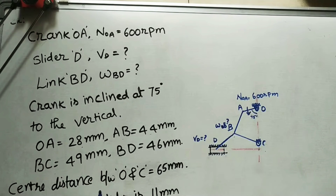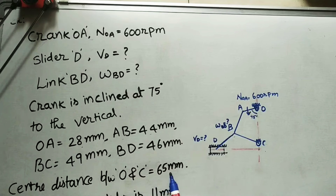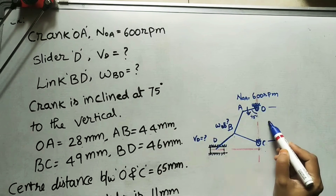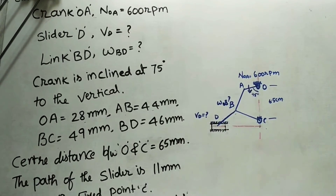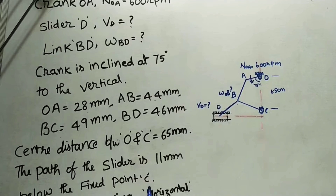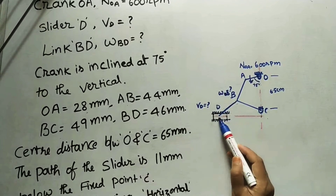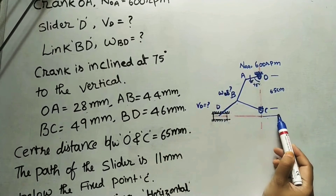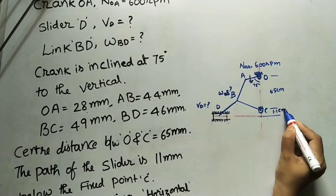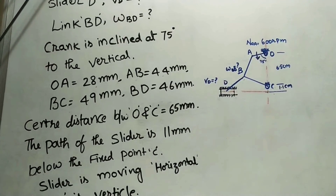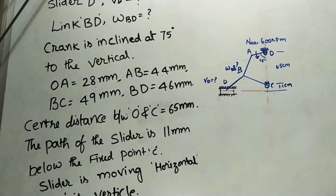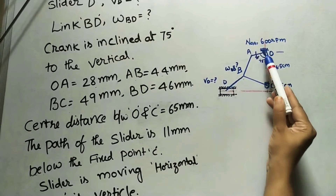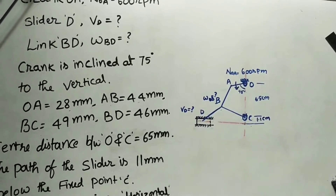BD length is 4.6 cm. One more data: the center distance between O and C. There are two centers, O and C. The distance between O and C is 65 mm or 6.5 cm. Next given data: the path of the slider is 11 mm below the fixed point C. The path of the slider is horizontal. The distance between C and the path of this slider is 11 mm, meaning 1.1 cm. The slider is moving horizontally, and O and C are both vertical fixed points.